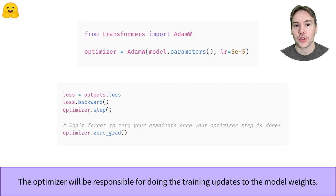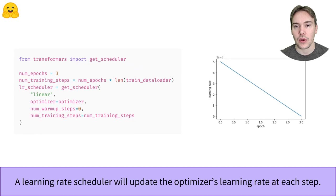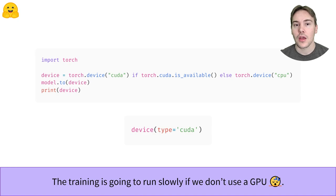We could already write our training loop, but we'll add 2 more things to make it as good as it can be. The first one is a learning rate scheduler to progressively decay your learning rate to zero. The getScheduler function from the Transformers library is a convenient function to easily build such a scheduler. You can again use any PyTorch learning rate scheduler instead. Finally, if we want our training to take a couple of minutes instead of a few hours, we'll need to use a GPU. The first step is to get one, for instance by using a Colab notebook.